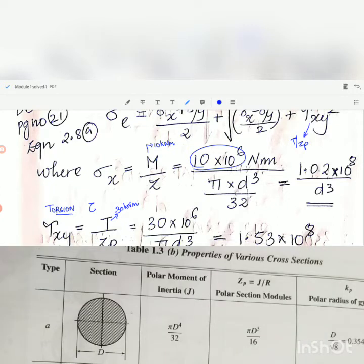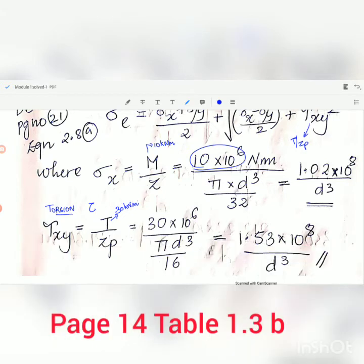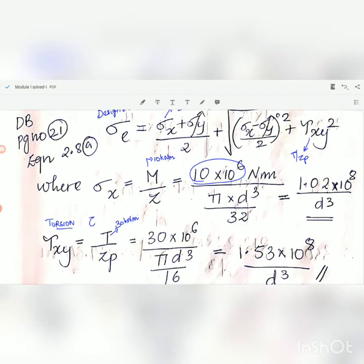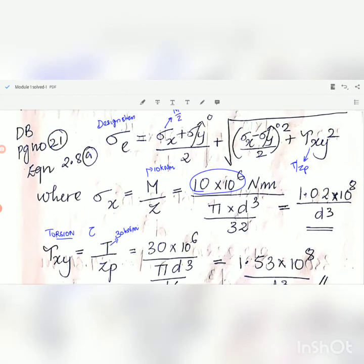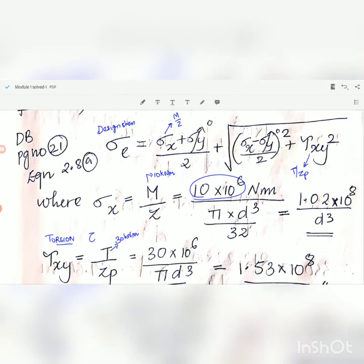You can take it from page number 13. zp equals pi d cubed by 16. Substituting we will be getting tau xy equal to 1.53 into 10 to the power 8 by d cubed. Now we can substitute these values sigma x and tau xy in this equation. In this equation there is no stress along y axis, so sigma y turns to 0.